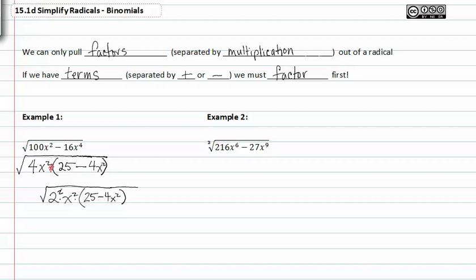Again, we can ask ourselves how many times 2 or the index will go into the exponent. In this case 2 will go into 2 one time, so we can pull out 2 to the first power. Again with the x we ask ourselves how many times the index will go into the exponent, and in this case 2 will go into 2 one time with a remainder of zero each time. So the only thing that's left inside the radical is the 25 minus 4x². My final answer is 2x times the square root of 25 minus 4x².